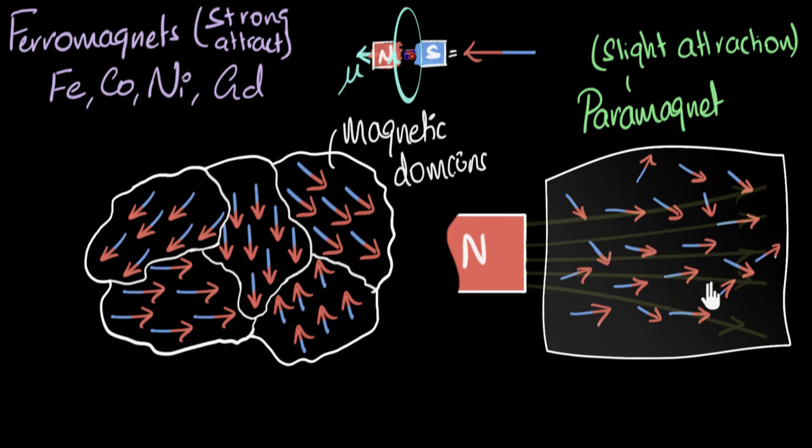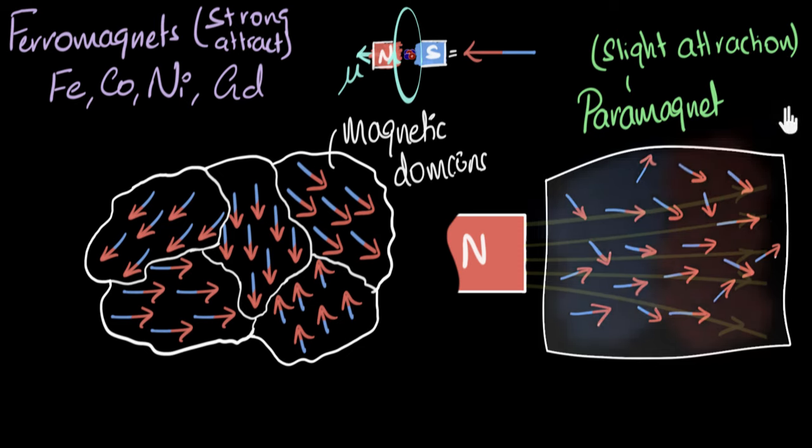But what you end up getting is you get some kind of a weak alignment. It's not very random now, but it's not completely aligned, but you get some kind of weak alignment. And as a result of that, you now see this bar of aluminum is slightly, slightly magnetized, this side being north, this side being south. And as a result, this will now get slightly attracted by the magnet.